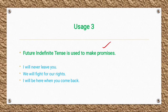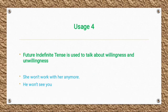Third usage: Future Indefinite Tense is used to make promises. For example: 'I will never leave you', 'We will fight for our rights', 'I will be here when you come back.'